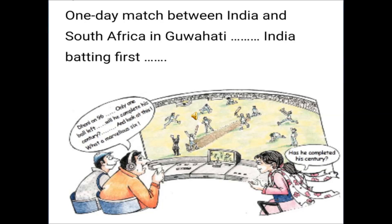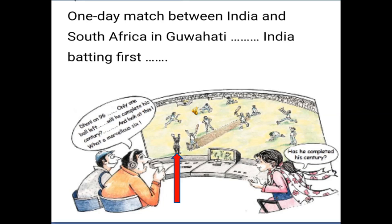A century has 100 runs. He has already scored 96. So how many more runs does he need? He needs 4 more runs. But how will you know if he was able to score 4 more runs? If you look above the red arrow, we can see the umpire. Do you know what signal he is conveying? Yes, it's a 6. So Dhoni has scored a 6. He already scored 96 runs. If we add 6, then what will be his total score? 96 plus 6 is equal to 102.